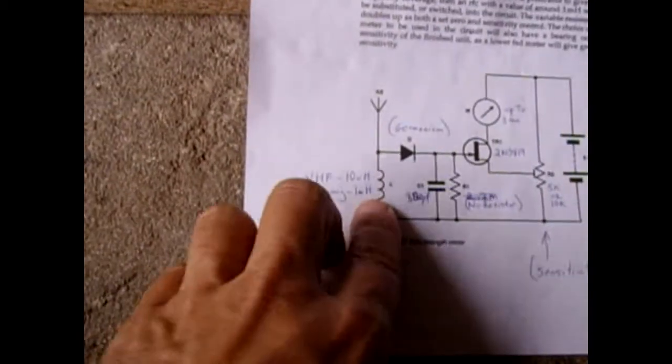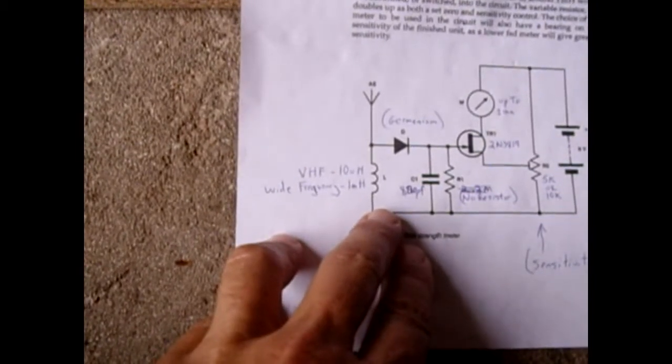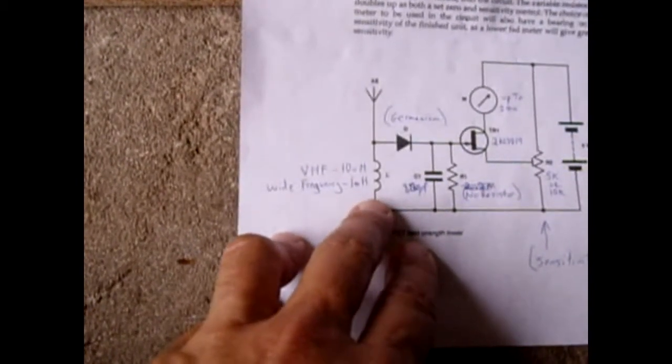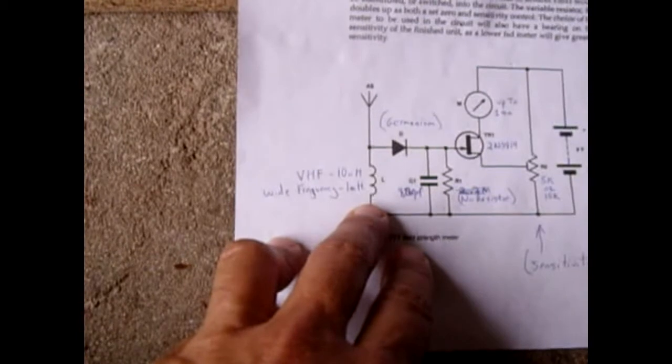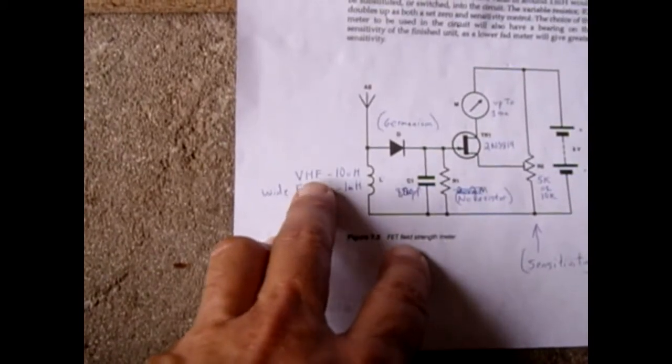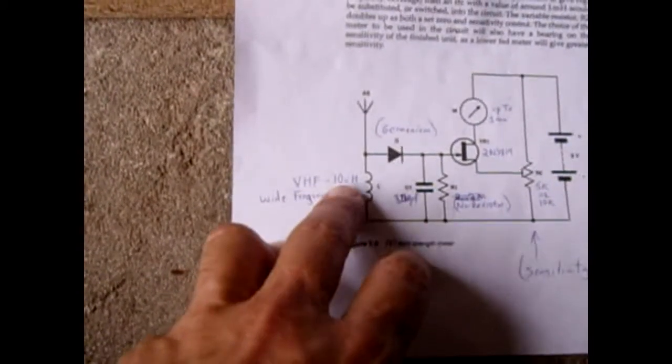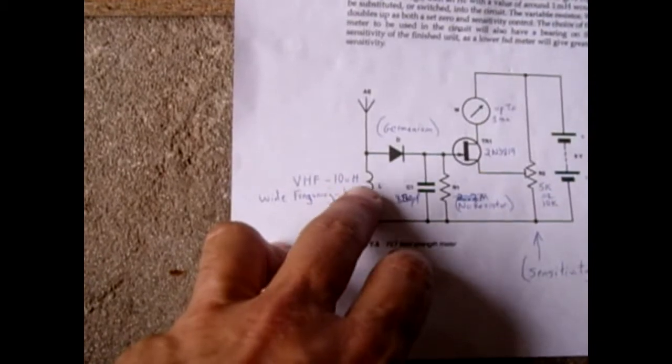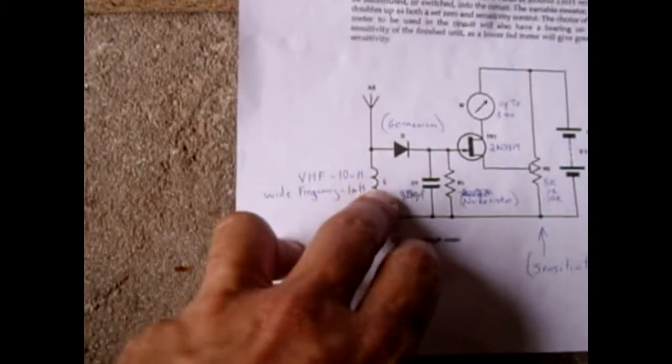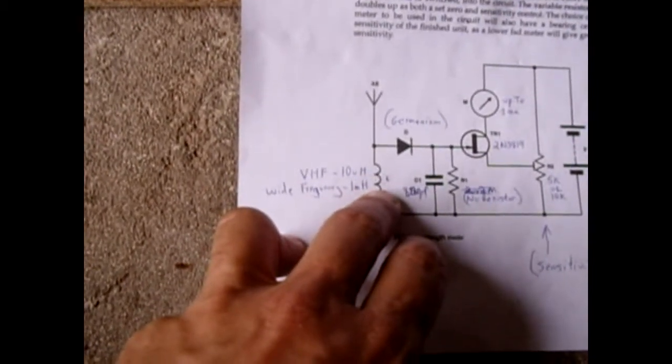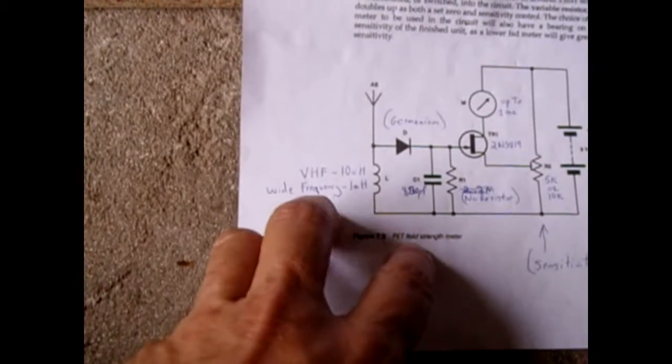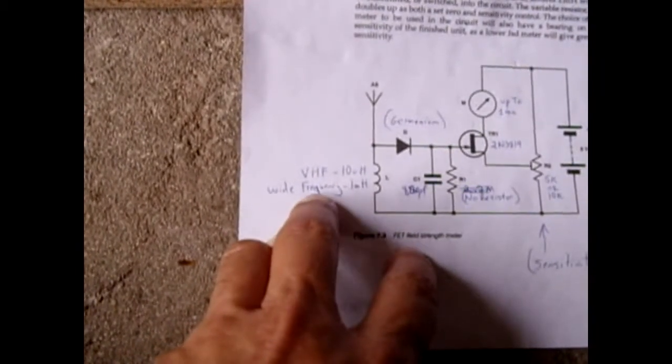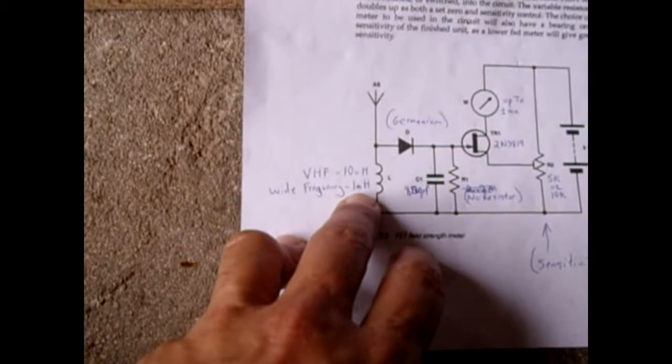Now for the choke, if you want to make one that's going to respond to a wide range of frequencies, say the VHF or the UHF band, what you're going to have to do is find a 10uH choke that you can put right in here. Those are very common. Or if you want to go for a wide frequency like UHF and other frequencies, put a 1mH.